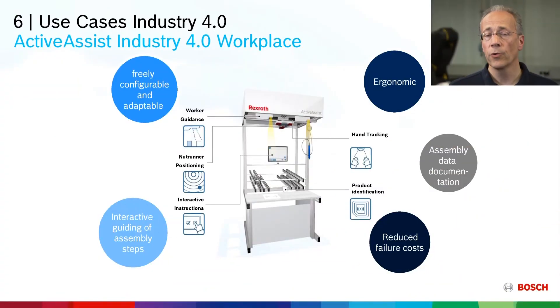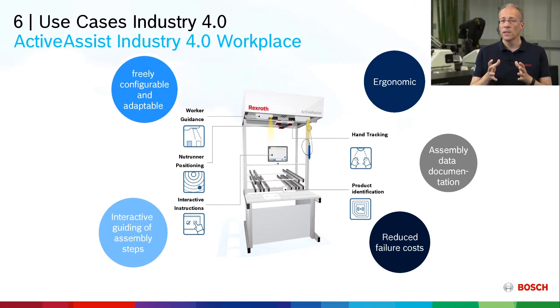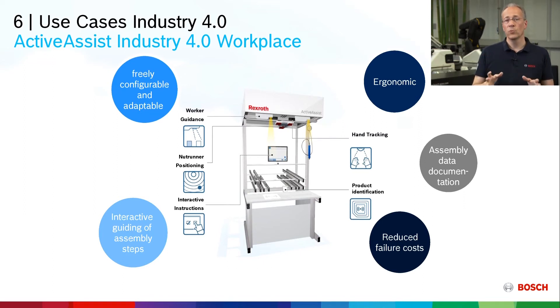The next example is an intelligent Industry 4.0 workplace that supports operators in very complex assembly steps. We collected all the learnings from the Hamburg line into one new product. It includes ergonomic adaptations — the workstation lifts in height, lighting is adapted — as well as individual text guidance or video instructions for different operators, Poka-yoke instructions, and RFID tracking. It's the best of our learnings combined in one product, and customer feedback when we first showed it at the Hanover Trade Fair was excellent.